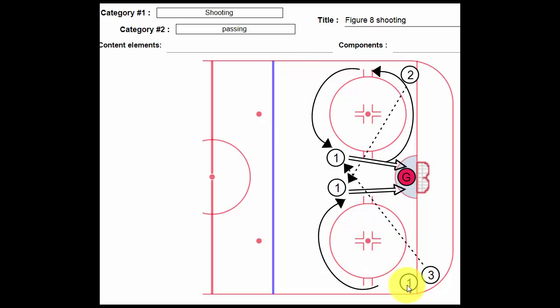The way this works is this. We have player 1, player 3, player 2, and obviously player 4 over there. Player 1 starts off around the circle, calls and takes a pass here from player 2, shoots the puck, follows...